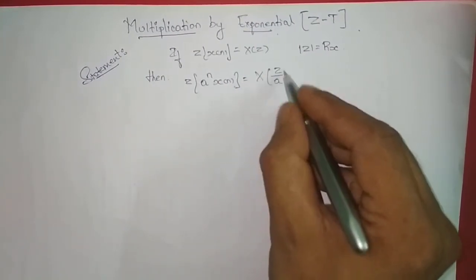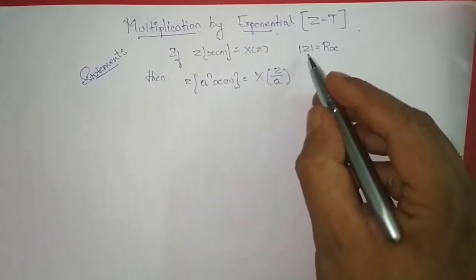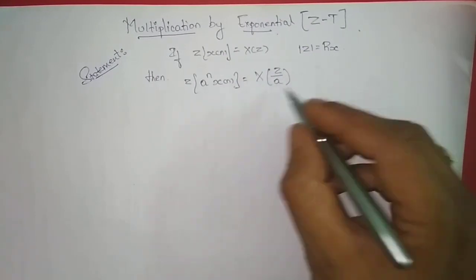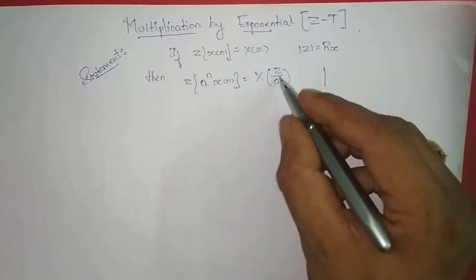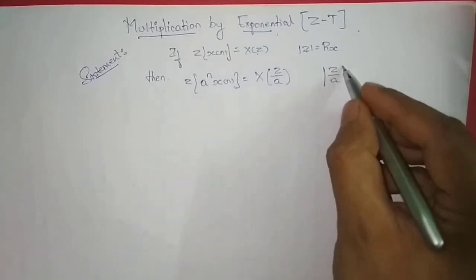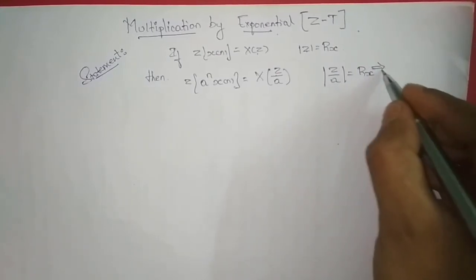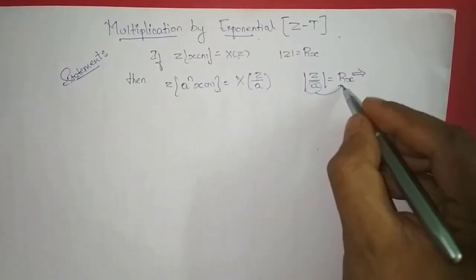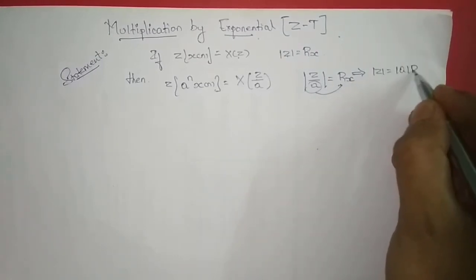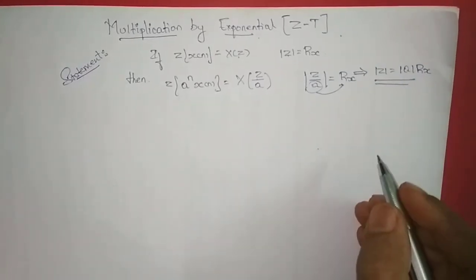This is given by X(Z/a), and the ROC is now modified. Before the transformation, the ROC is |Z| = Rx. After the transformation, instead of Z we write |Z/A| = Rx, which implies mod of Z equals mod of A times Rx. So this is the new ROC.